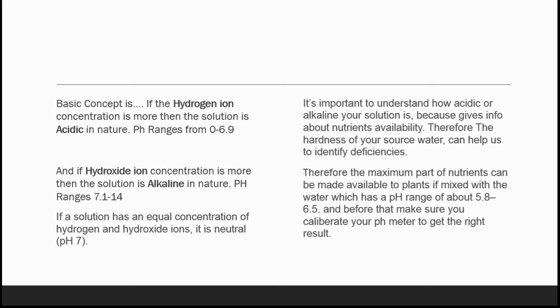Therefore, the hardness of your source water can help us identify deficiencies. The maximum power of nutrients can be made available to the plants if mixed with water which has a pH range of about 5.8 to 6.5. Before that, make sure you calibrate your pH meter to get the right result.